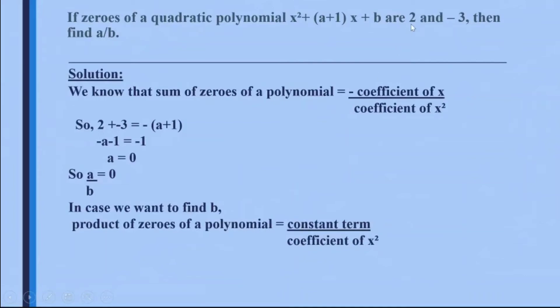So product of the zeros once again becomes 2 × (-3) and the constant term is b. Coefficient of x² is 1. So I get that 2 × (-3) = b/1. That means -6 = b. So I get a = 0, b = -6.